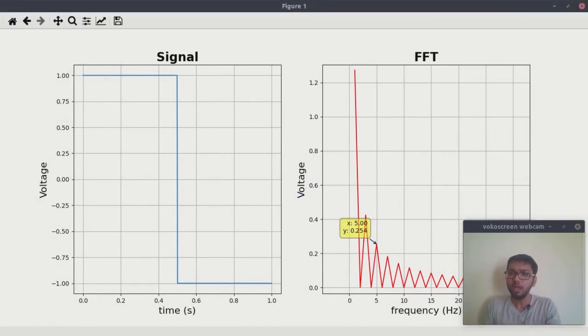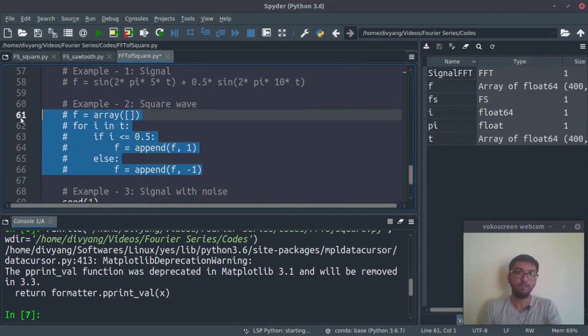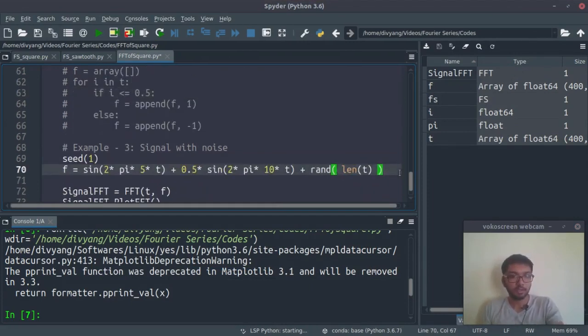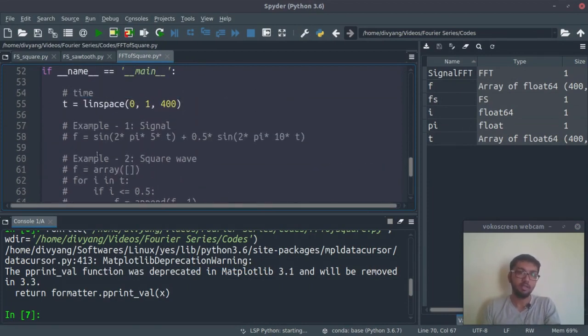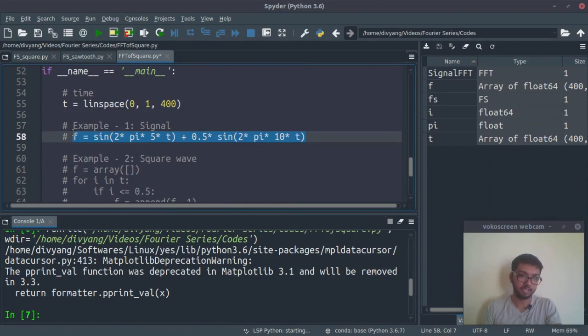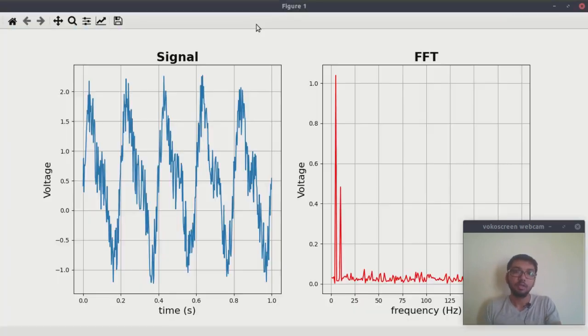Using Fast Fourier Transform, we can easily visualize how many frequencies are present in our signal. Let's try one more example, a tough one. I am using the same signal which we have seen in the first example, but this time I am adding some noise by writing this rand function.